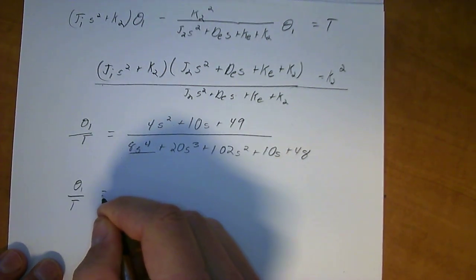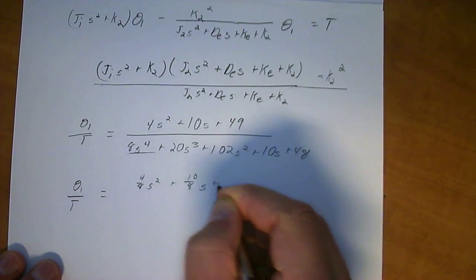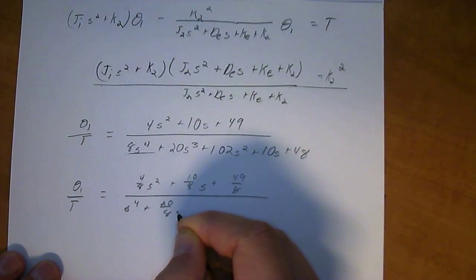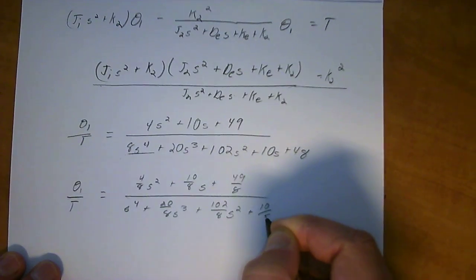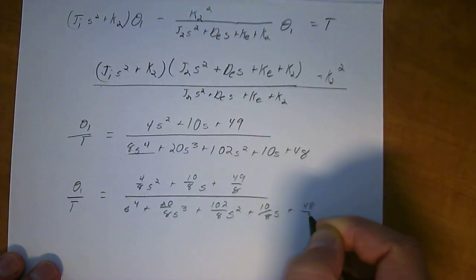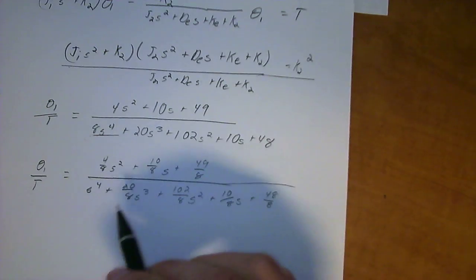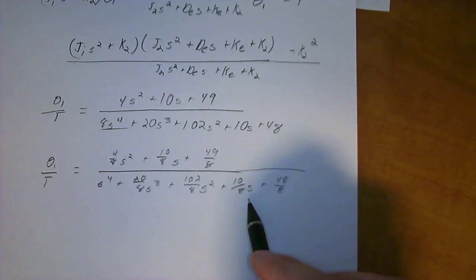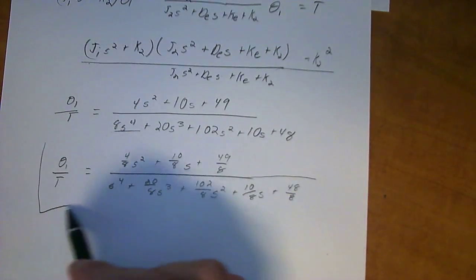And I'm actually not going to do the complete math on that either. I'm just going to show it to you. This will actually be equal to 4 over 8 S squared plus 10 over 8 S plus 49 over 8, all over S to the 4th plus 20 over 8 S cubed plus 102 over 8 S squared plus 10 over 8 S plus 48 over 8. Now, these would be really easy simplifications, but if you're in a test and you're in a hurry, these fractions are usually okay with your professors. But this is the complete transfer function for the rotational system that we started with.